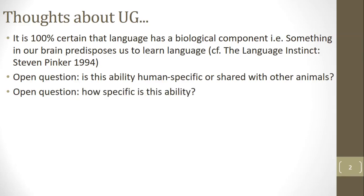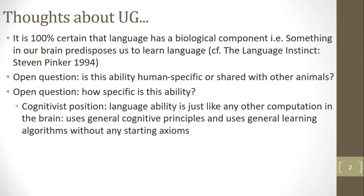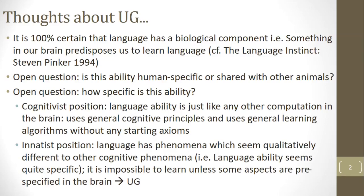The other open question is how specific is this ability? There are two general positions around this the cognitivist position and the innatist position and there's some overlap between the two. The cognitivists claim that language ability is just like any other computation in the brain. It uses general cognitive principles such as analogy generalization and other learning mechanisms. The innatist position claims that language has phenomena which seem qualitatively different to other cognitive phenomena. In other words the language ability seems to be quite specific. For instance it's not easy to find instances of agreement movement etc in say the visual system. Innatists claim it is impossible to learn a natural language unless some aspects are pre-specified in the brain and these things that are pre-specified would be universal grammar.